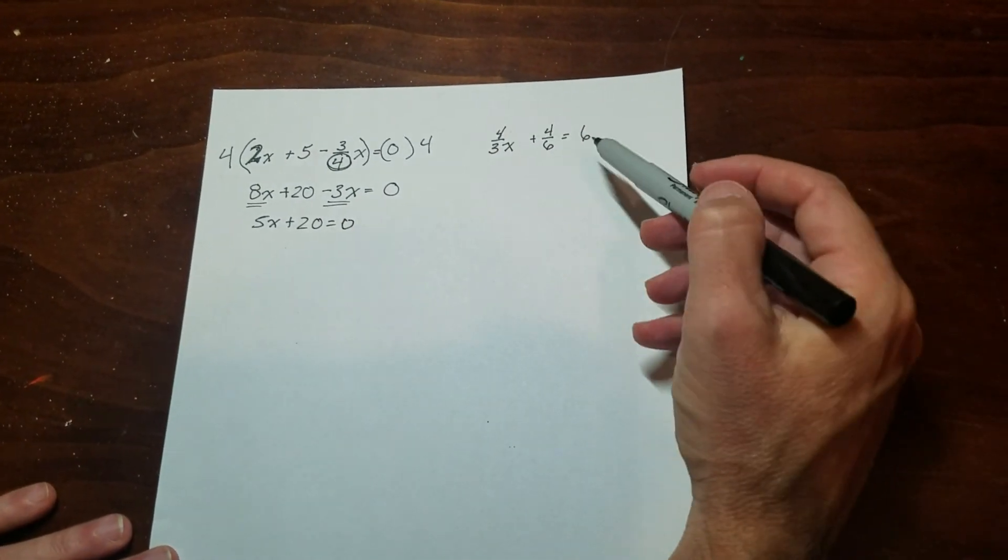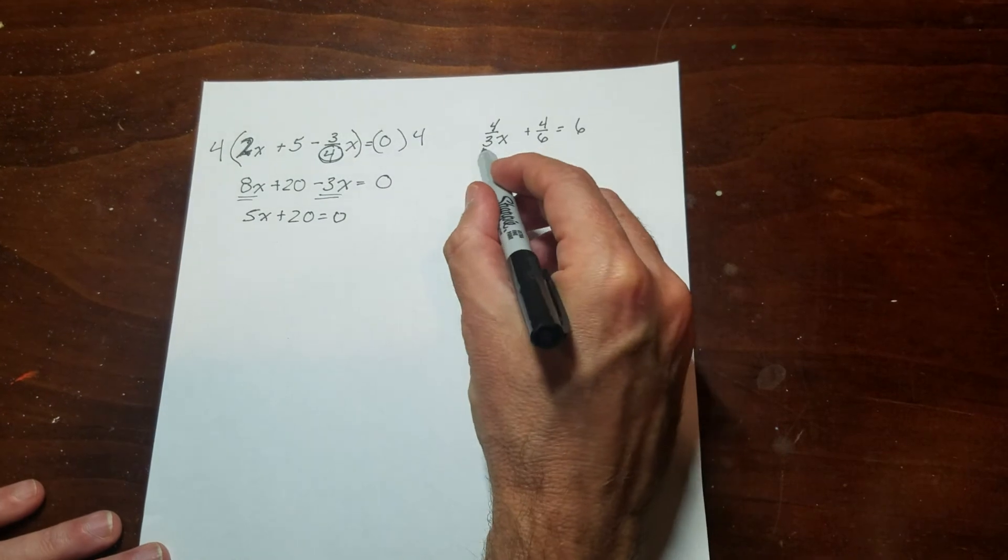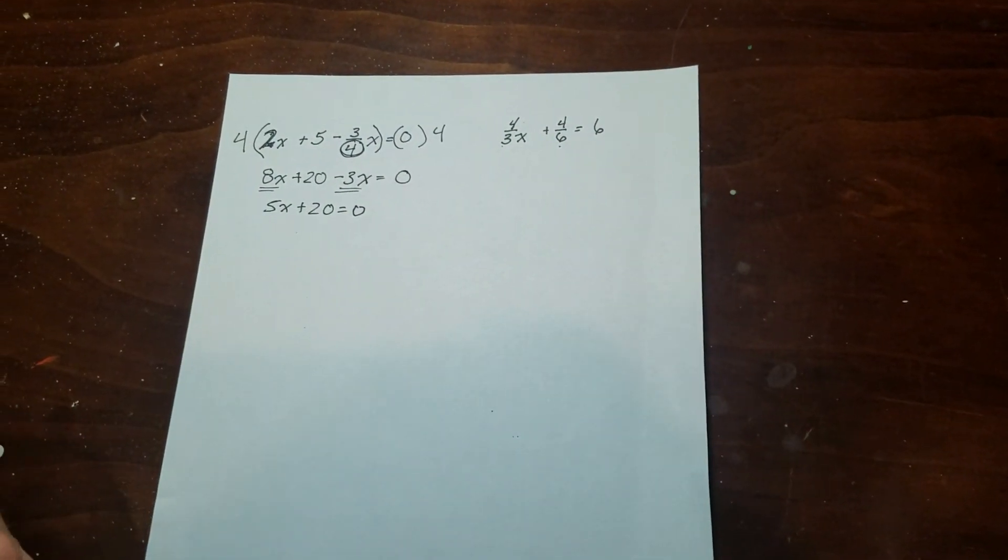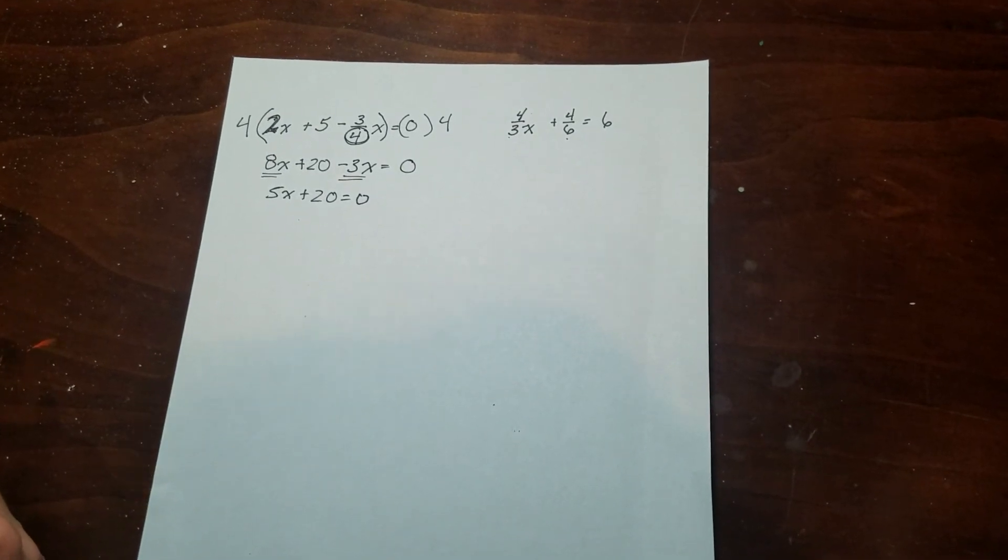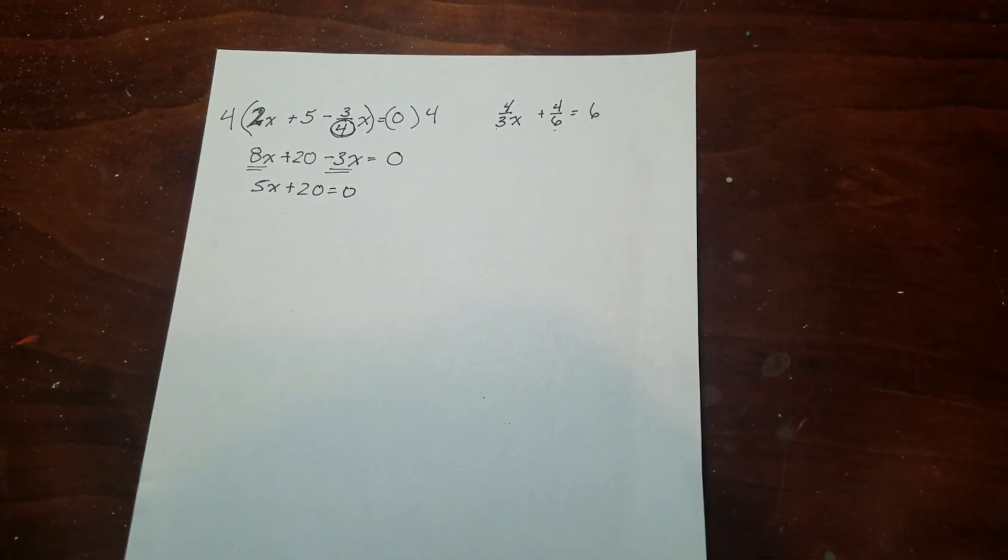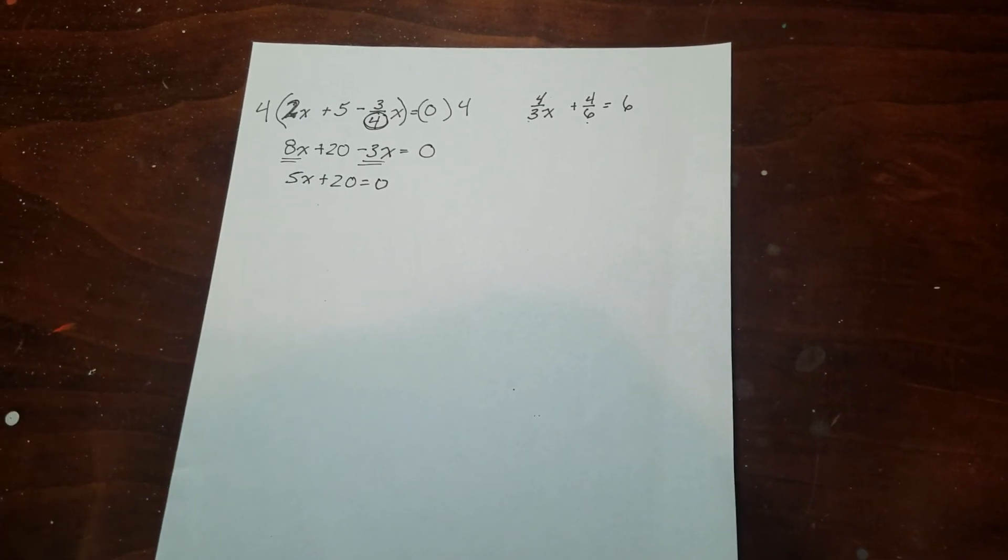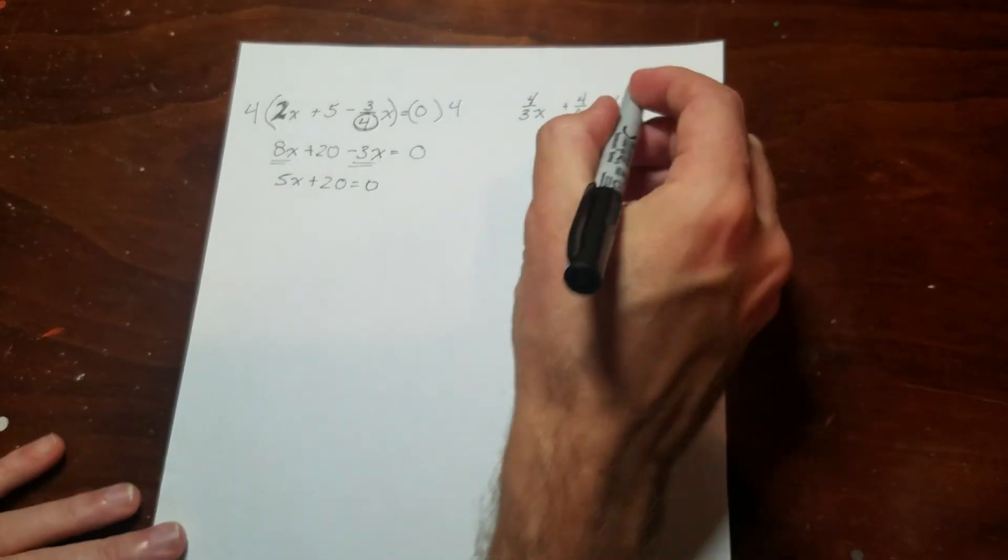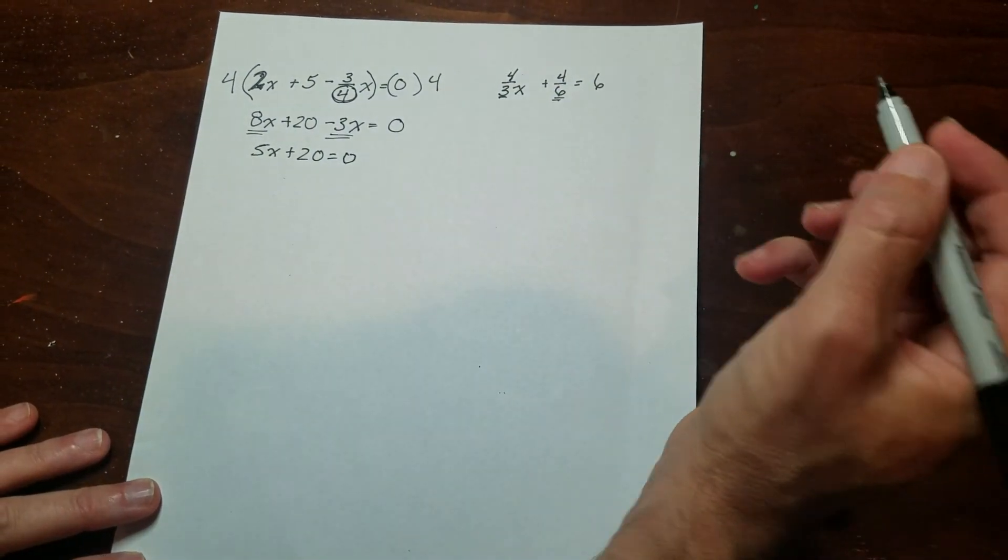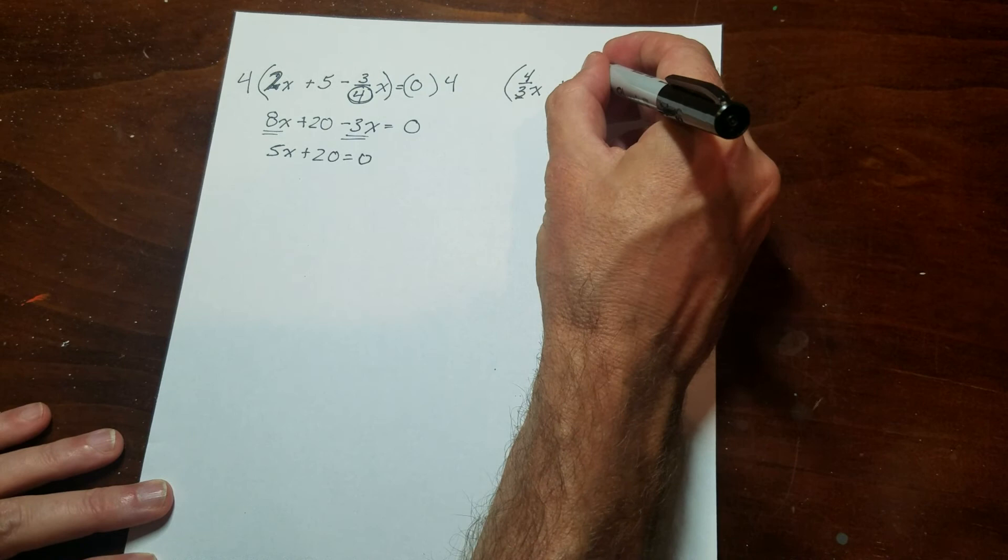This guy over here. So this is a little bit different. There's a 3 and a 6. So what I have to do is think of a number that both go into. So it's kind of like when you're adding fractions. You need a common denominator to add them. So you've got choices. A lot of times kids will go, well, I'm going to use 18. Could you use 18? Absolutely. But what I do is I check to see if the small one goes into the big one. And in this case, it does. So I'm actually going to use the 6.